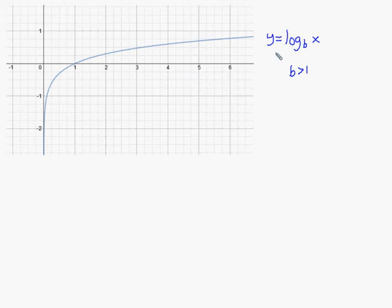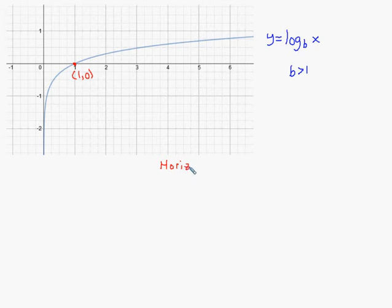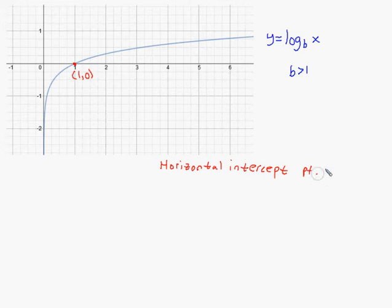Unless you're shifting the graph up, down, left, or right — which we won't do until the next chapter — one key fact is that the graph crosses the x-axis at (1, 0). The x-axis is typically called the horizontal axis, so a question may ask for the horizontal intercept rather than the x-intercept. Students know what they're doing but get mixed up in the terminology. The horizontal intercept is the point (1, 0), where the graph crosses the horizontal axis.